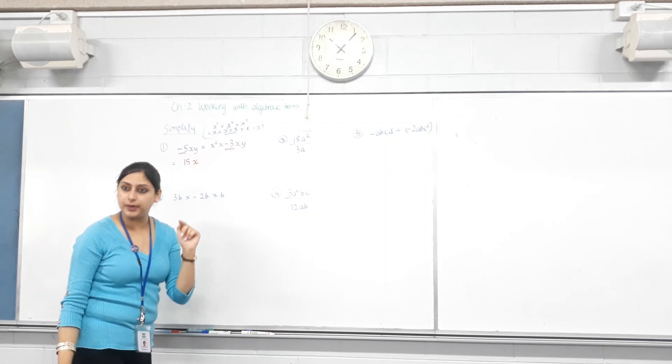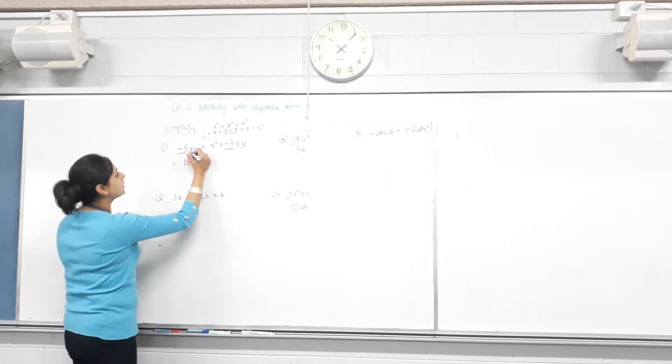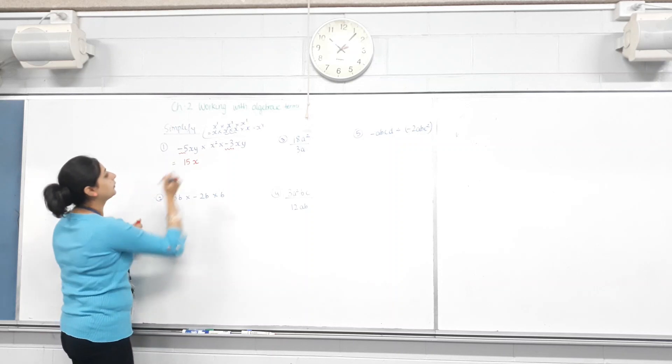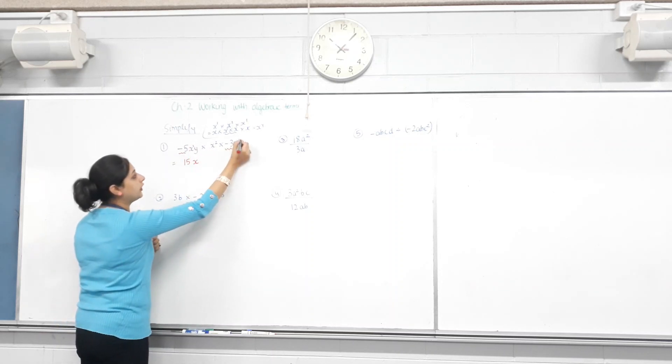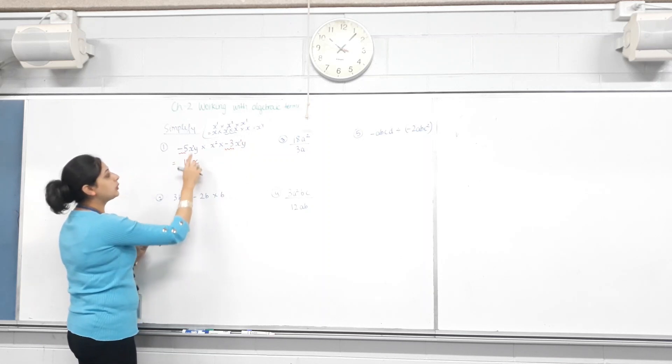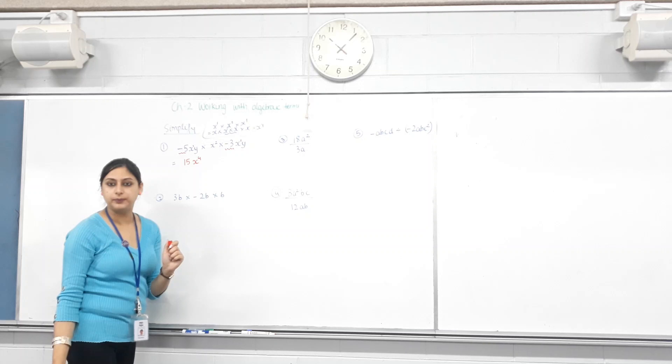So, when letters are being multiplied, their powers get added. X - what's the power of X here? One. What's the power of X here? Two. What's the power of X here? One. So, how many X's do we have? One plus two plus one? Four.